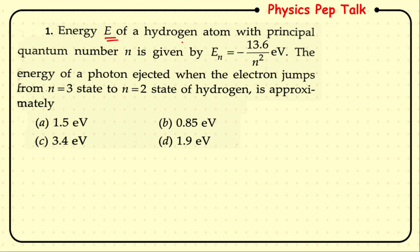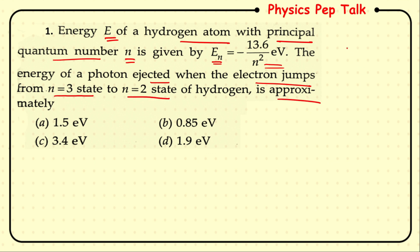The energy of a hydrogen atom with principal quantum number n is given by E(n) = −13.6 eV / n². The energy of a photon ejected when the electron jumps from n = 3 to n = 2 state of hydrogen is approximately — let us consider these two energy levels. The electron jumps from n = 3 to n = 2, and as a result a photon is emitted.